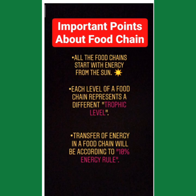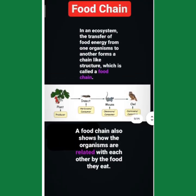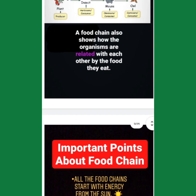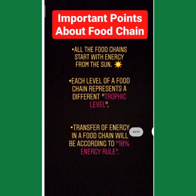Each level of a food chain represents a different trophic level. For example: plant, insect, mouse, owl — these are all different levels in the food chain. We give each of them a particular name. What is the name? Trophic level. You can also call them energy levels.